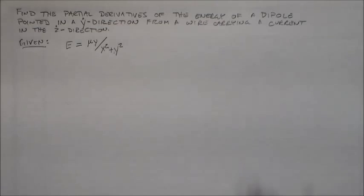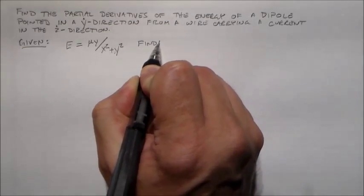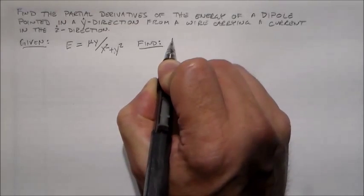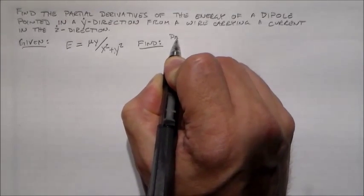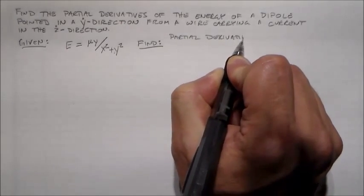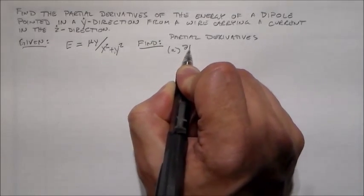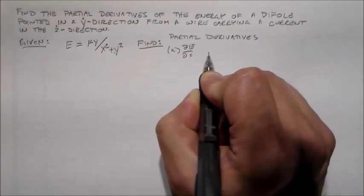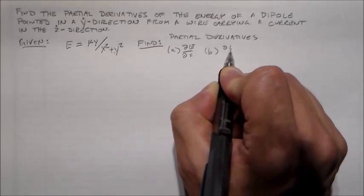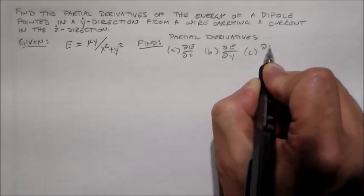That seems pretty simple to play with, alright? And what do I want to find? I want to find the partial derivatives. So let's see, I've got three different directions. So I want to find dE/dx and dE/dy and dE/dz, alright?